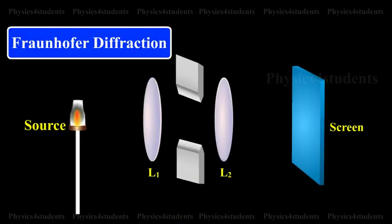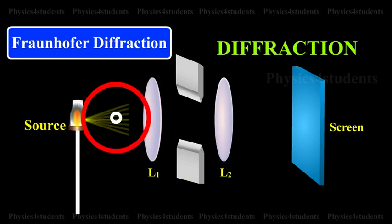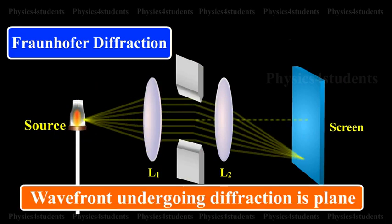In the Fraunhofer diffraction, the source and the screen are at finite distances from the obstacle producing diffraction. Hence, in this case, the wavefront undergoing diffraction is plane.